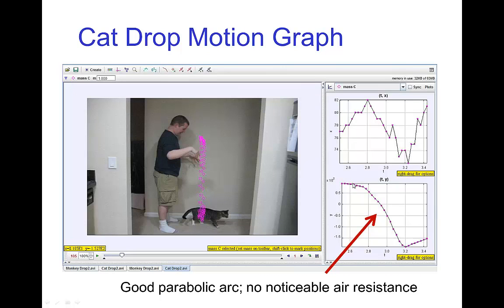Doing some frame by frame analysis of the falling motion, we see pretty much a parabolic arc. And it turns out for a distance of just a few feet, air resistance is not significant for a cat.